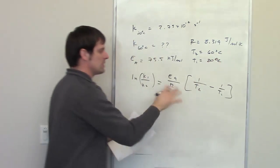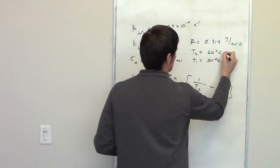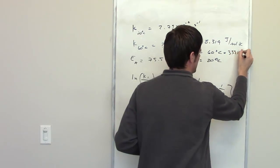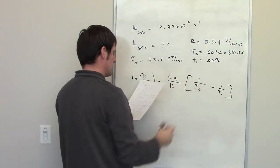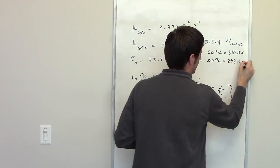In order to make sure your units are consistent, however, you'll have to convert to kelvins. 60 degrees Celsius, adding 273.15 to it, is equal to 333.15 kelvins, and 20 degrees Celsius is equal to 293.15 kelvins.